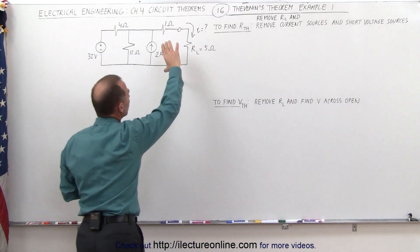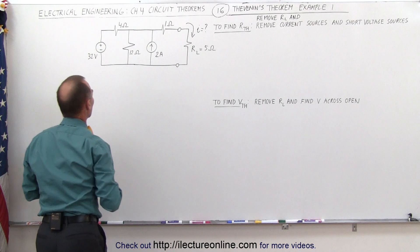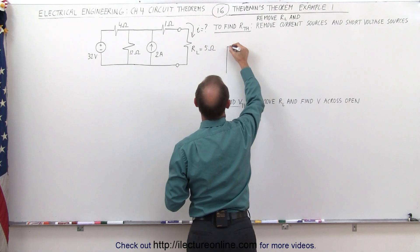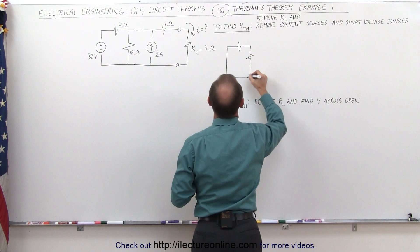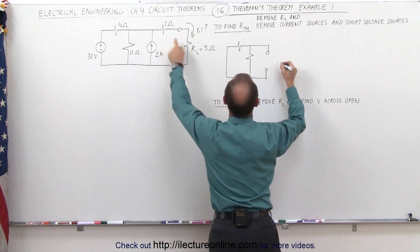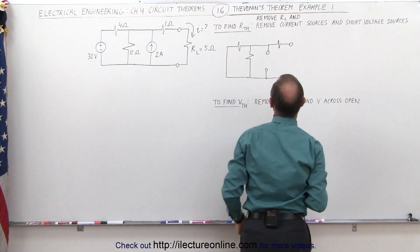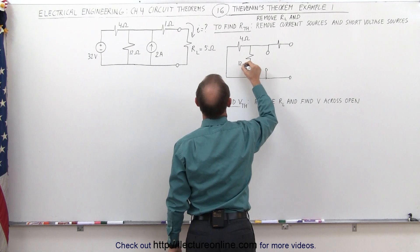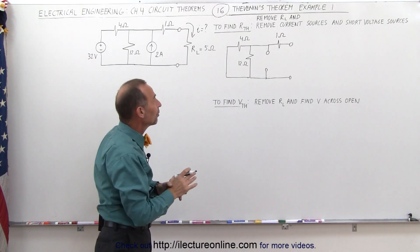Let's go ahead and do that. We remove the load resistor, then we're going to take away the current source so that will be an open, and then we'll short out the voltage source. The circuit will then look as follows. We have a short where the voltage source was, we still have the 4 ohm resistor, we still have the 12 ohm resistor, and then we have the attachments here — that's where the load resistor would go. Let's put in the values: we have the 4 ohm resistor, the 12 ohm resistor, and the 1 ohm resistor. The resistance of what's remaining will be the Thevenin resistance.